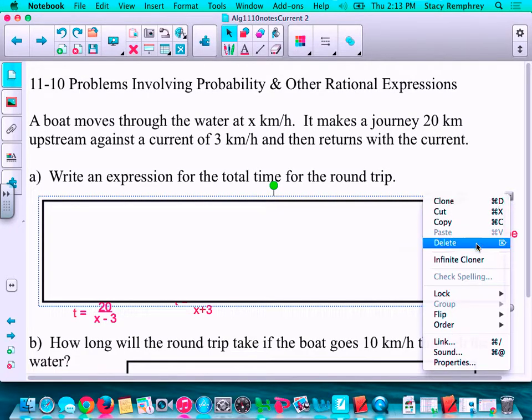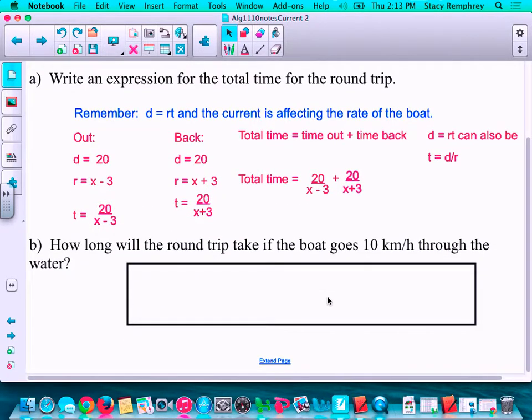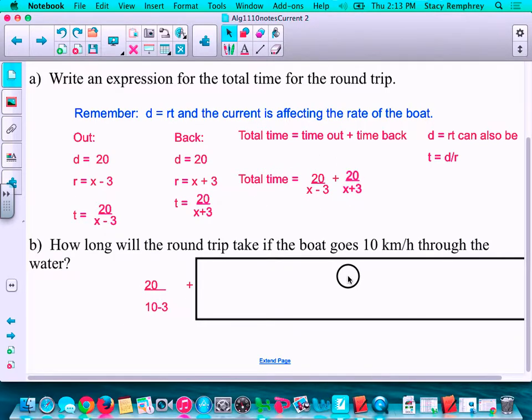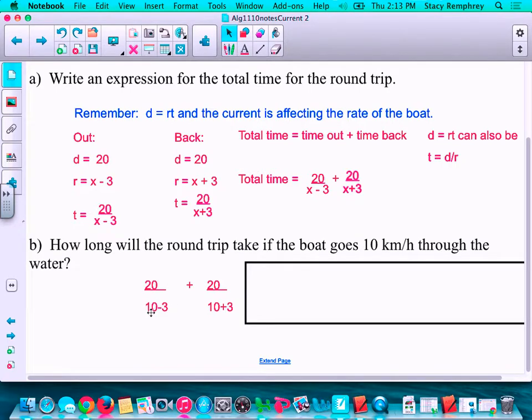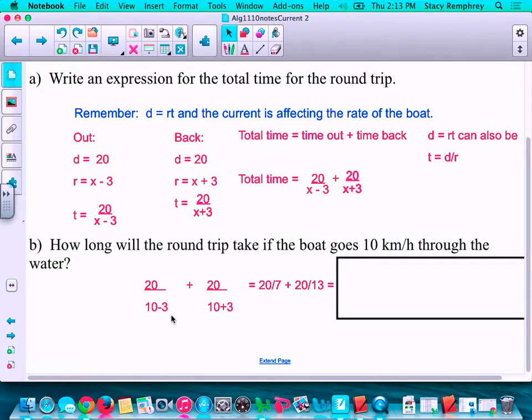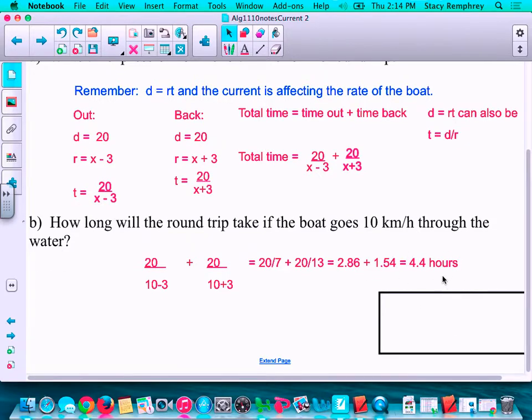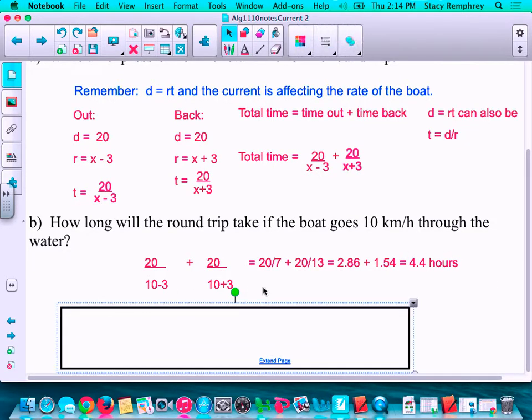Now for the next question, how long will the round trip take if the boat goes 10 kilometers per hour? So I'm going to take this expression right here and fill in what I know. This time I know what x is. So I filled in 10 in place of x into this expression. I simplified 10 minus 3 was 7, 10 plus 3 was 13. I used my calculator to divide, and then I added and made sure I labeled. So your final answer would be 4.4 hours.